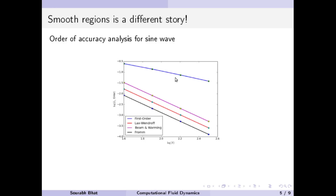That is one huge advantage of higher order methods. With a lesser number of cells in the mesh we can get the expected accuracy. The rate at which the error drops as we refine the mesh is also really high as the order of accuracy of the method increases.